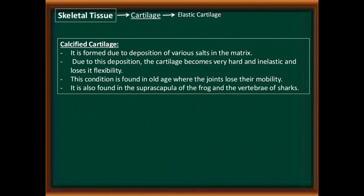Fourth: calcified cartilage. It is formed due to the deposition of various salts in the matrix, which makes the cartilage very hard, inelastic, and causes it to lose its flexibility. This condition is found in old age where joints lose their mobility. It is also found in the suprascapula of the frog and the vertebrae of sharks.